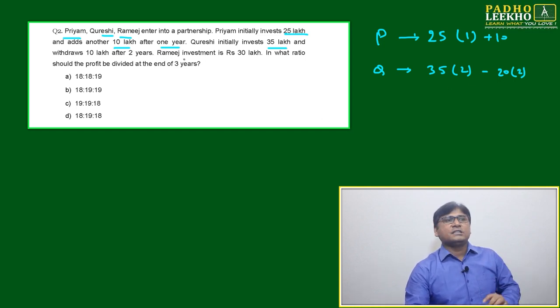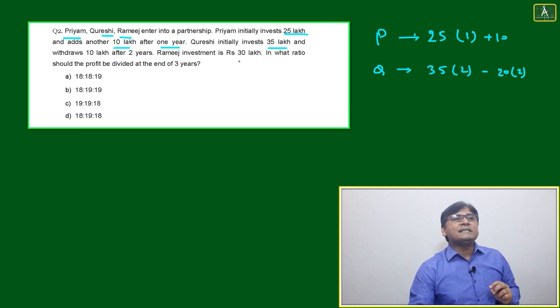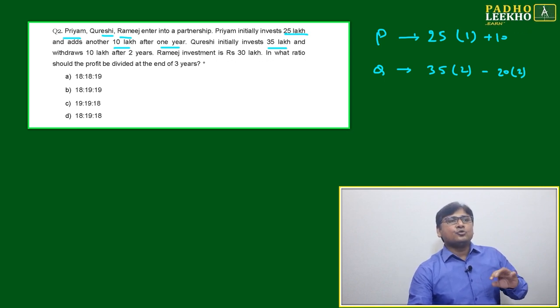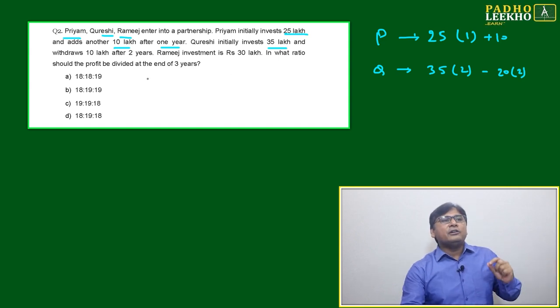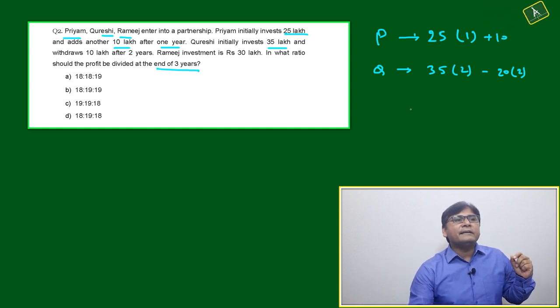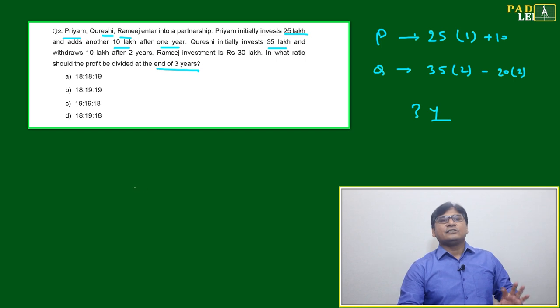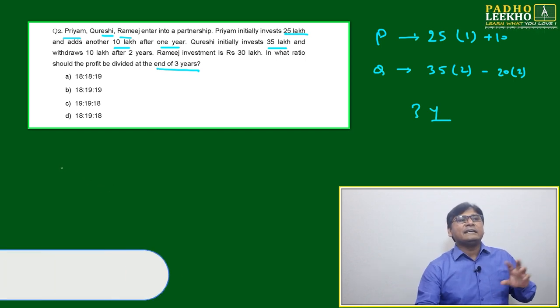Rameesh invests 30 lakh total, meaning he has not withdrawn or added any extra money in between. In what ratio should the profit be divided at the end of three years? The total time period is three years.